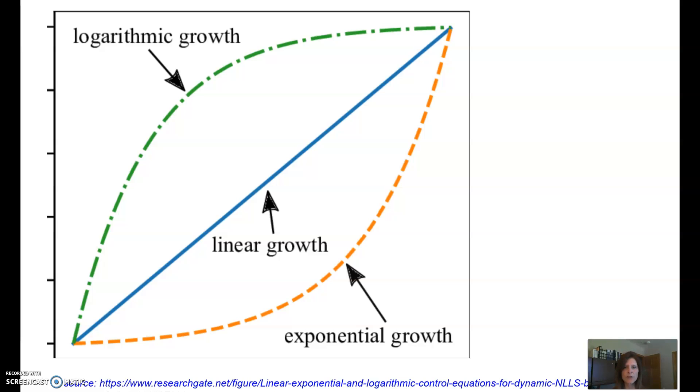To get an inverse function graph, we switch the x's and y's. So if you take all the ordered pairs on that orange graph and you flip them, you will get the green graph, and that's our logarithmic function. Notice they're both increasing functions, both representing growth, but it's a different type of growth. So the logarithmic function is modeling rapid growth initially that levels off.